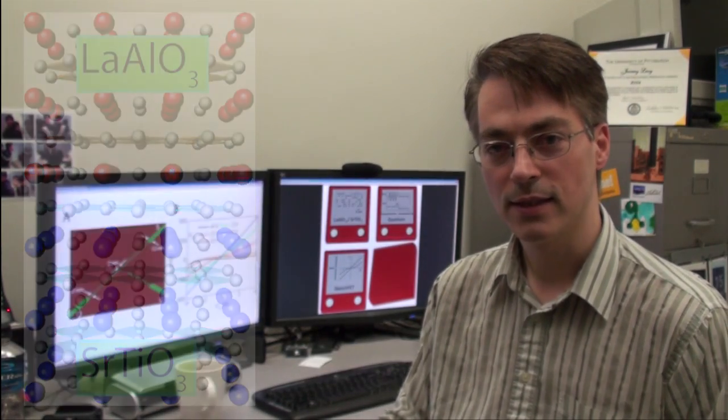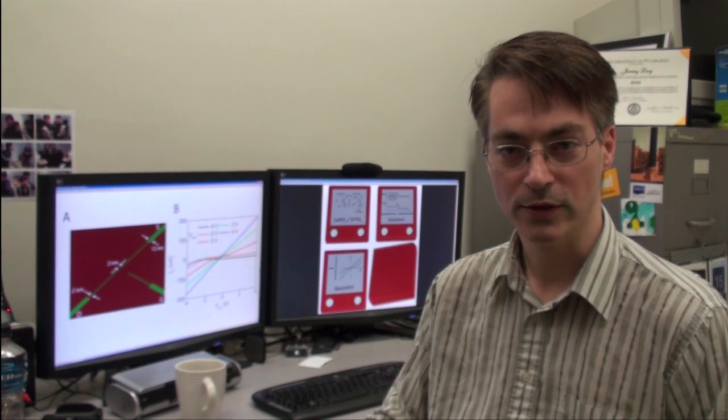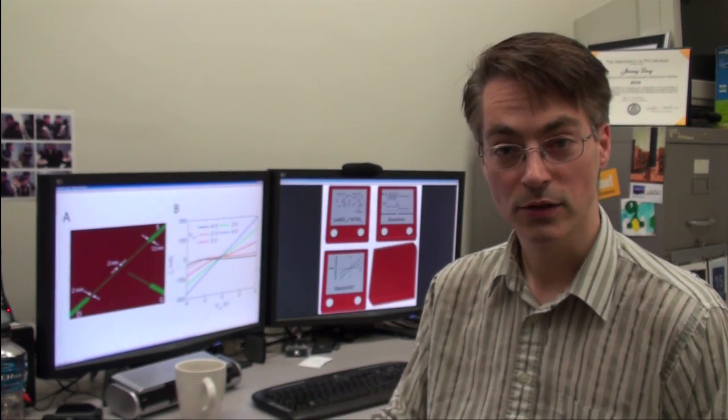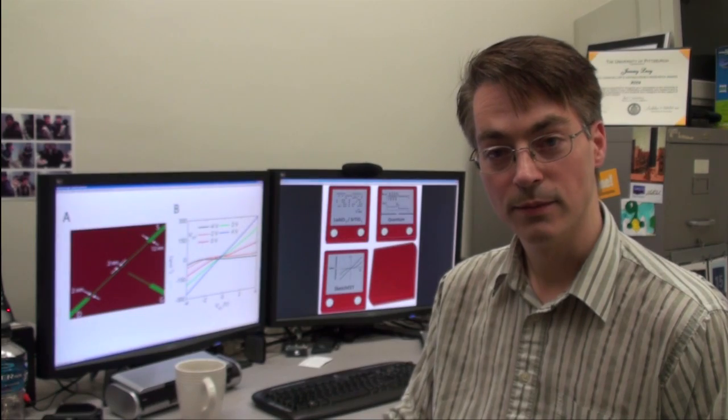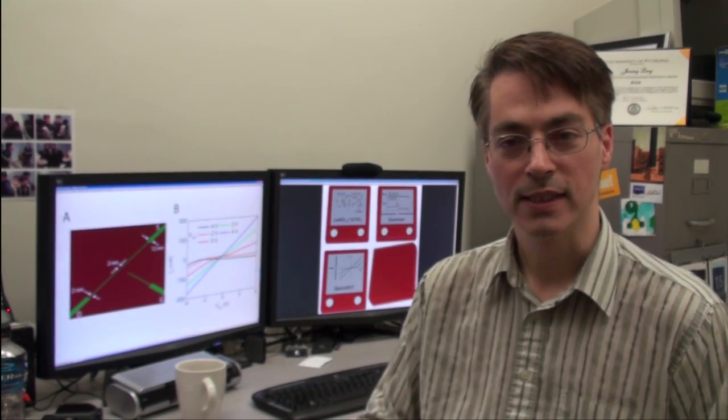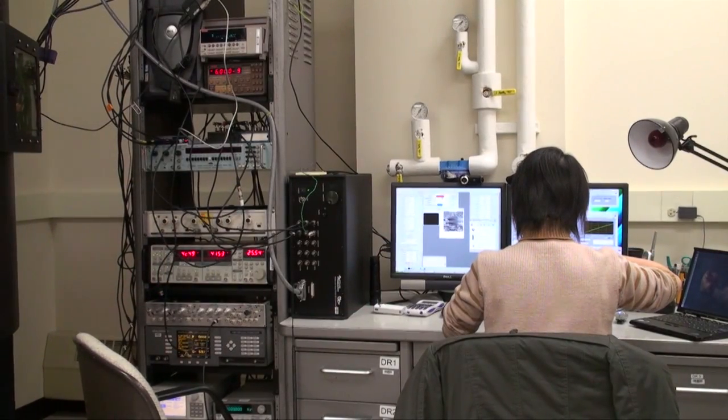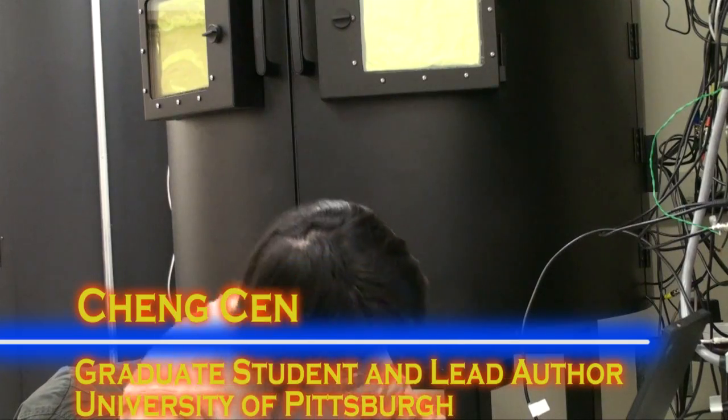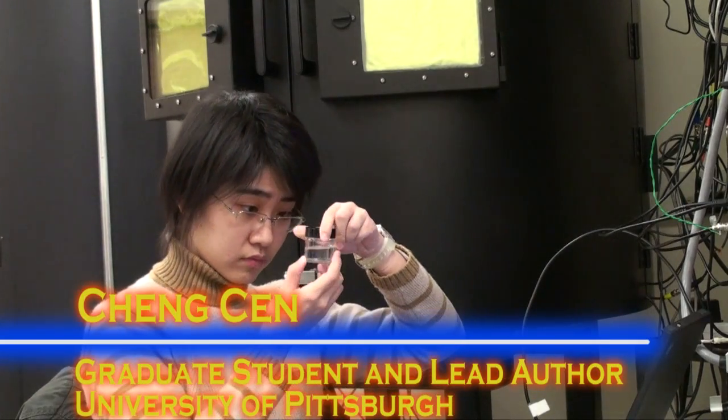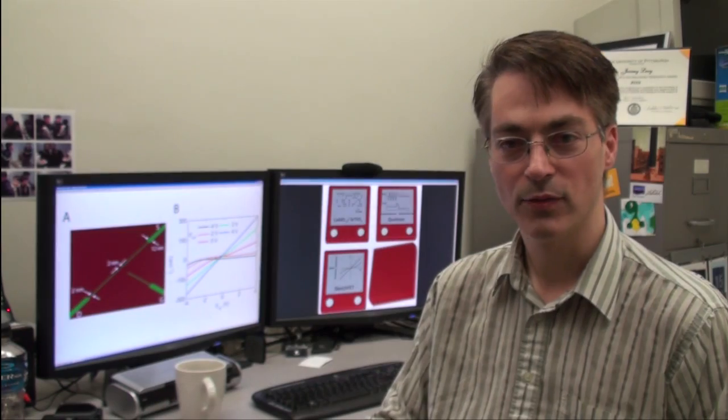It turns out that the interface—the region that separates those two materials—can either be a conductor or an insulator, and it can be switched back and forth using an electric field. We've discovered a way of controlling this transition, making it metal or an insulator on a scale that has never been seen before.